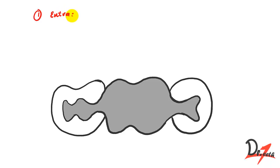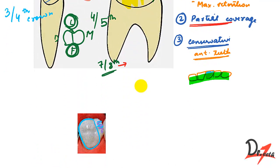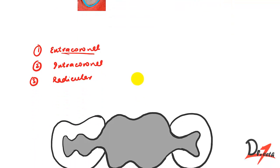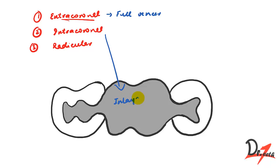Based on the mechanism of retention, we have three types: extracoronal retainers, intracoronal retainers, and radicular retainers. Extracoronal retainers obtain retention from the external surface of the abutment teeth — examples include the full veneer and partial veneer retainer. Intracoronal retainers obtain retention from within the coronal tooth surface — examples are inlays and onlays. Radicular retainers obtain retention from within the root of the abutment.